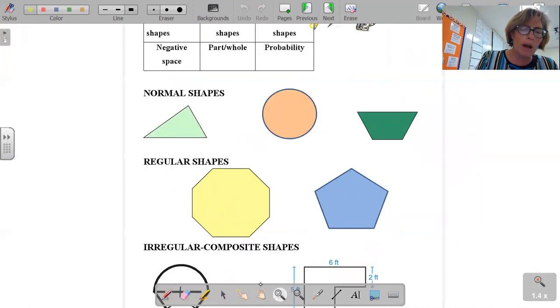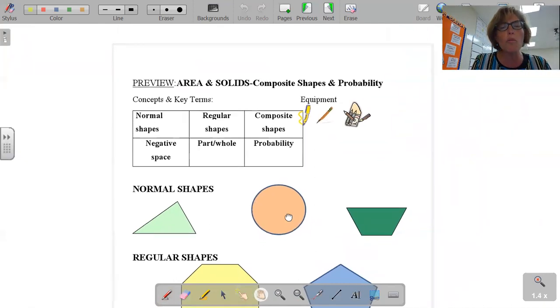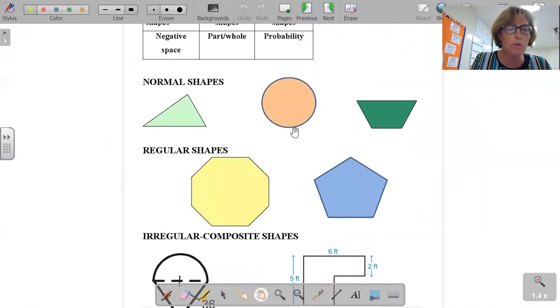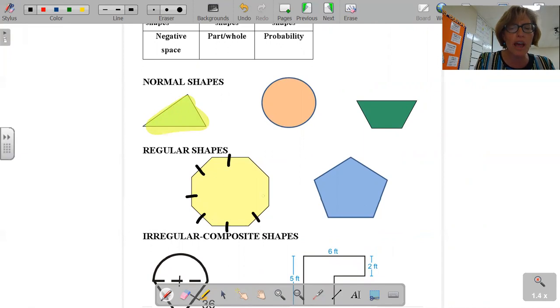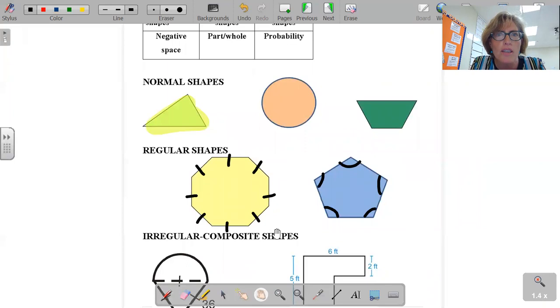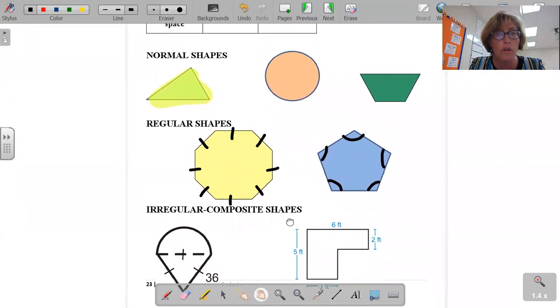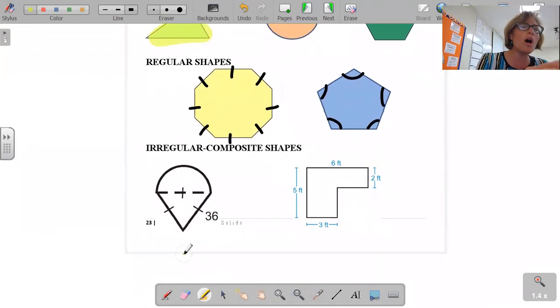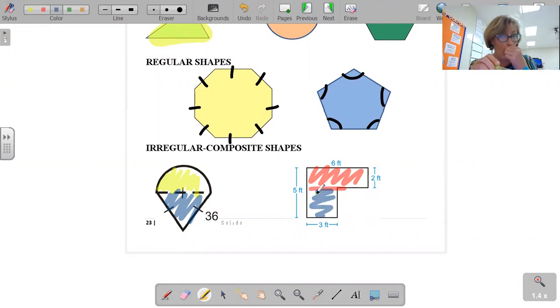So we are going to be learning about what are called irregular or composite shapes. Normal shapes are what you would consider the shapes you learned when you were a kid: triangles, circles, trapezoids, things like that. Regular shapes would be specifically shapes that have all equal sides and all equal angles. Composite shapes are combinations of normal and regular shapes. So a composite shape, for example, here we have a semi-circle combined with a triangle, or here we would look at this as two different rectangles.